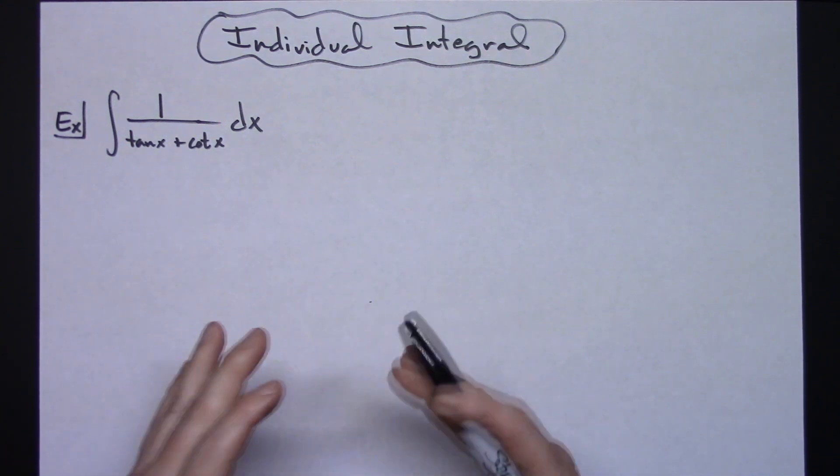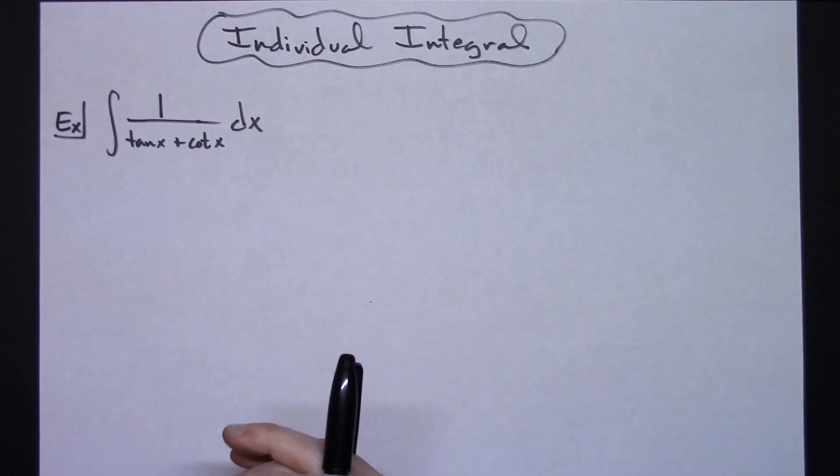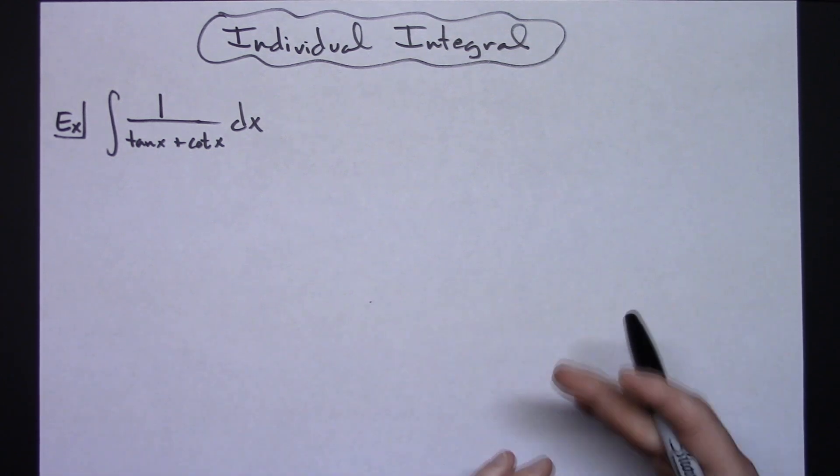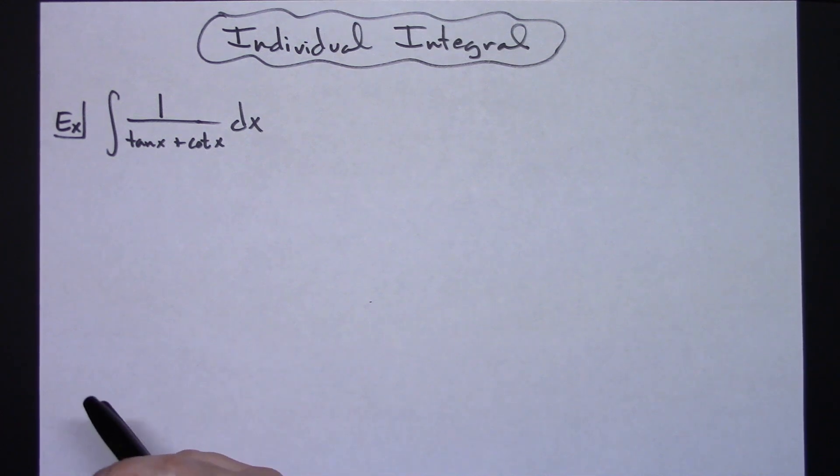Basically it's going to involve a lot of trig manipulation, some substitutions, things of that nature before we can finally get down to where we can do a u substitution on our integral.